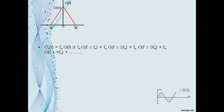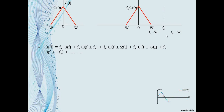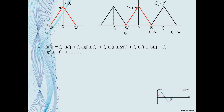We can draw the spectrum of the sampled signal: the first term G(f) is similar to the spectrum of the unsampled signal, but the magnitude is multiplied by Fs, giving Fs·G(0). The second term G(f + Fs) will have a bandwidth from Fs − W to Fs + W, and G(f − Fs) will have a spectrum from −Fs − W to −Fs + W. This is the spectrum of the sampled signal G_δ(f).